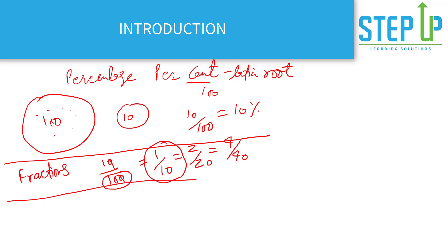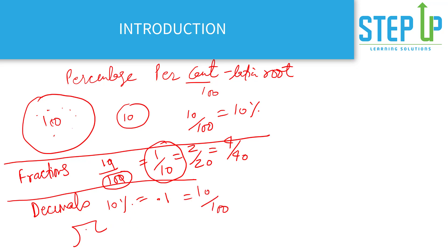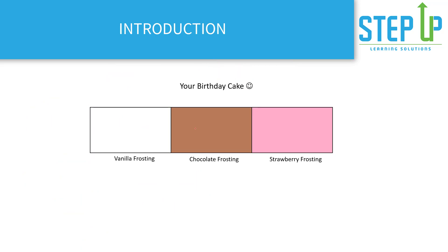A similar concept is the concept of decimals. For example, 10 percent can also be written as 0.1. Because 10 percent is 10 by 100, which gives you 0.1. So we saw that percentage is everything by 100, and we also saw how this can be converted into fractions or decimals and vice versa.